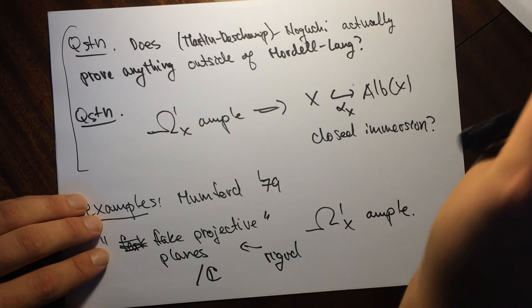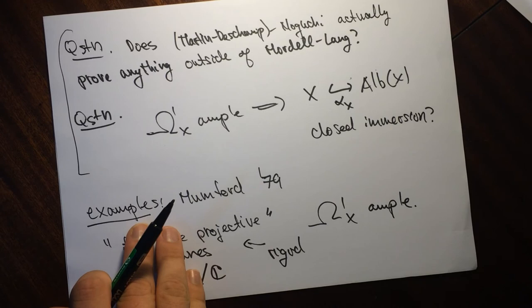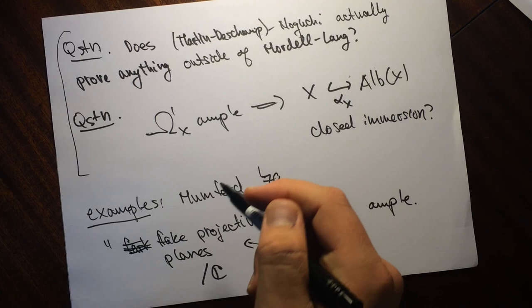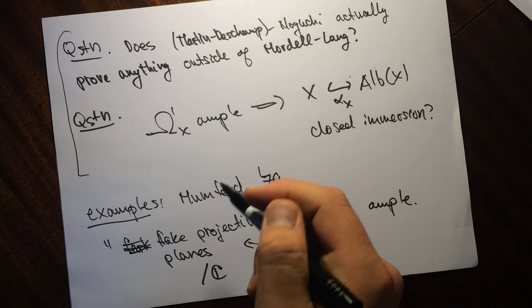What I'm going to talk about in another video is something I proved — it concerns things which are non-rigid, have ample cotangent bundle, and have Albanese equal to zero. With that being said, I'm going to wrap this video up. Thanks for watching — see you in the next video.